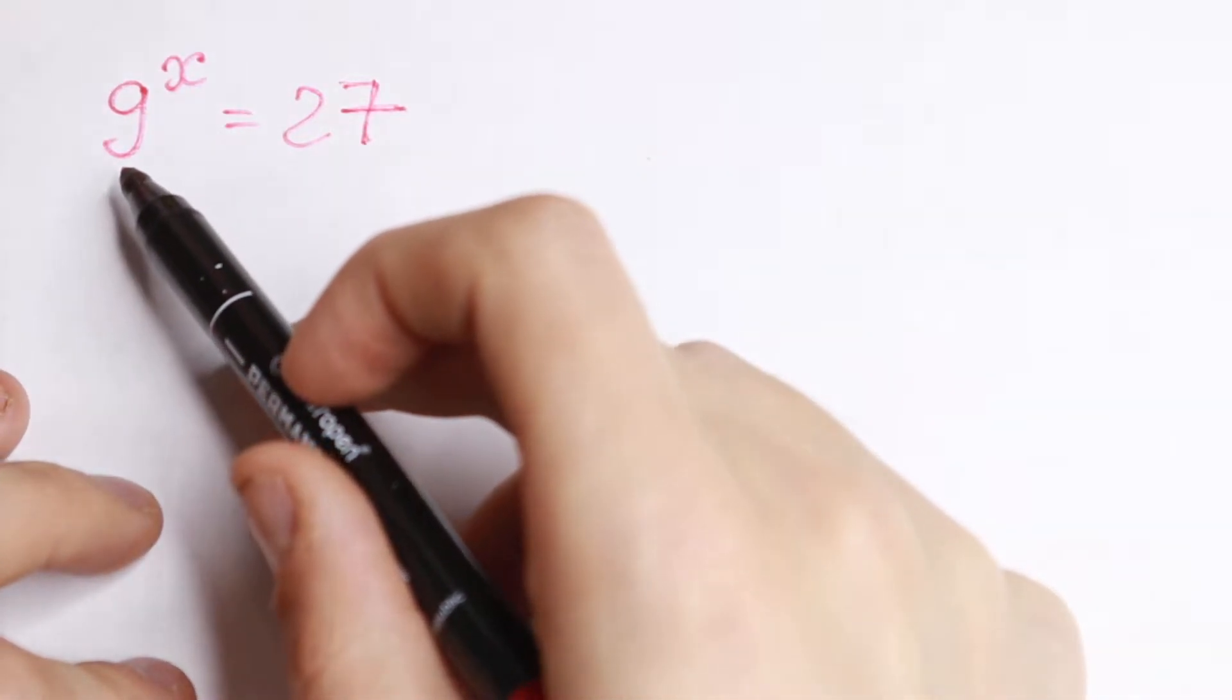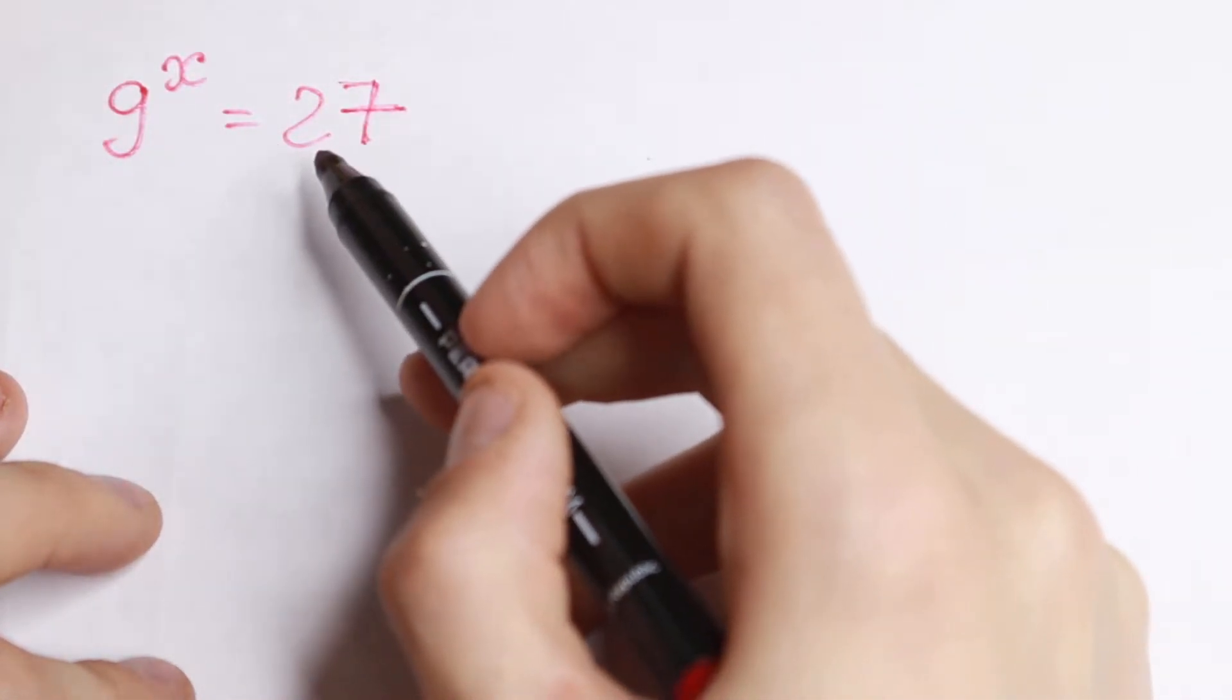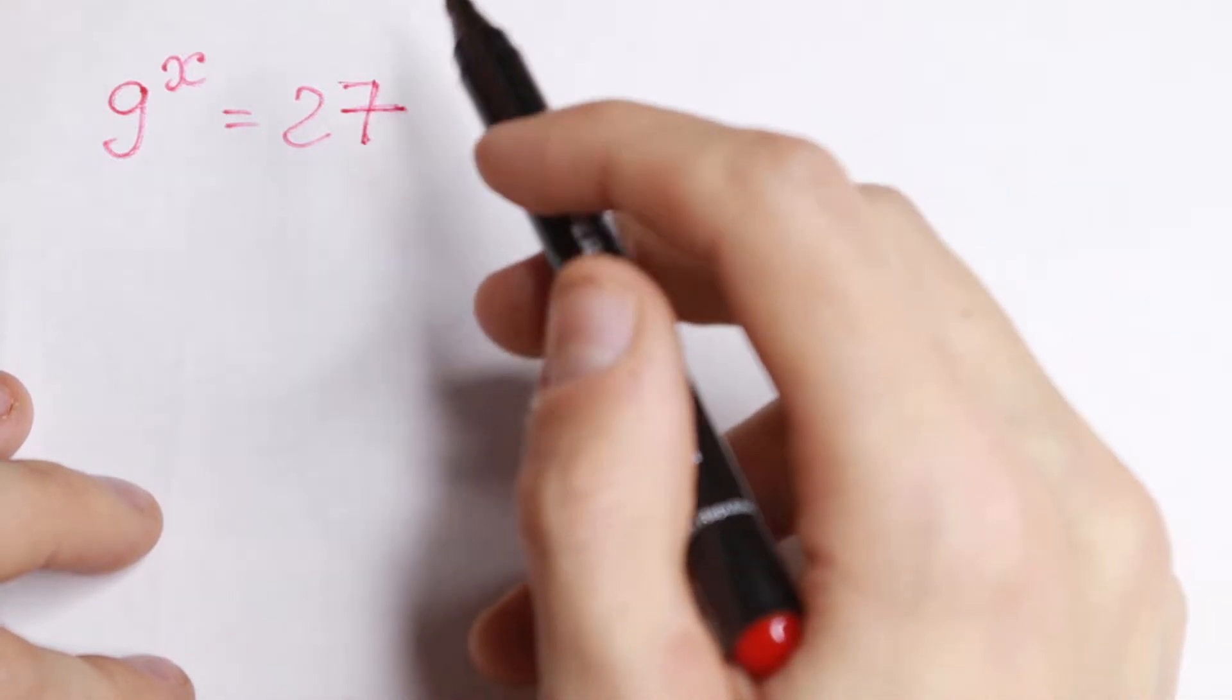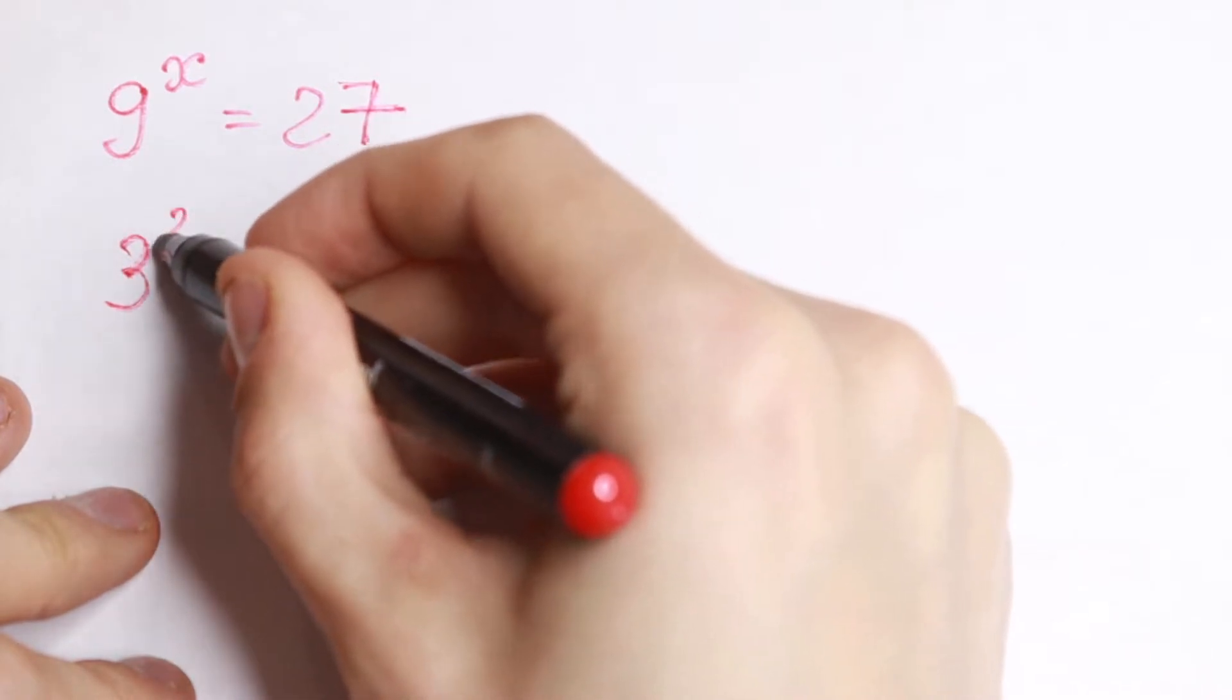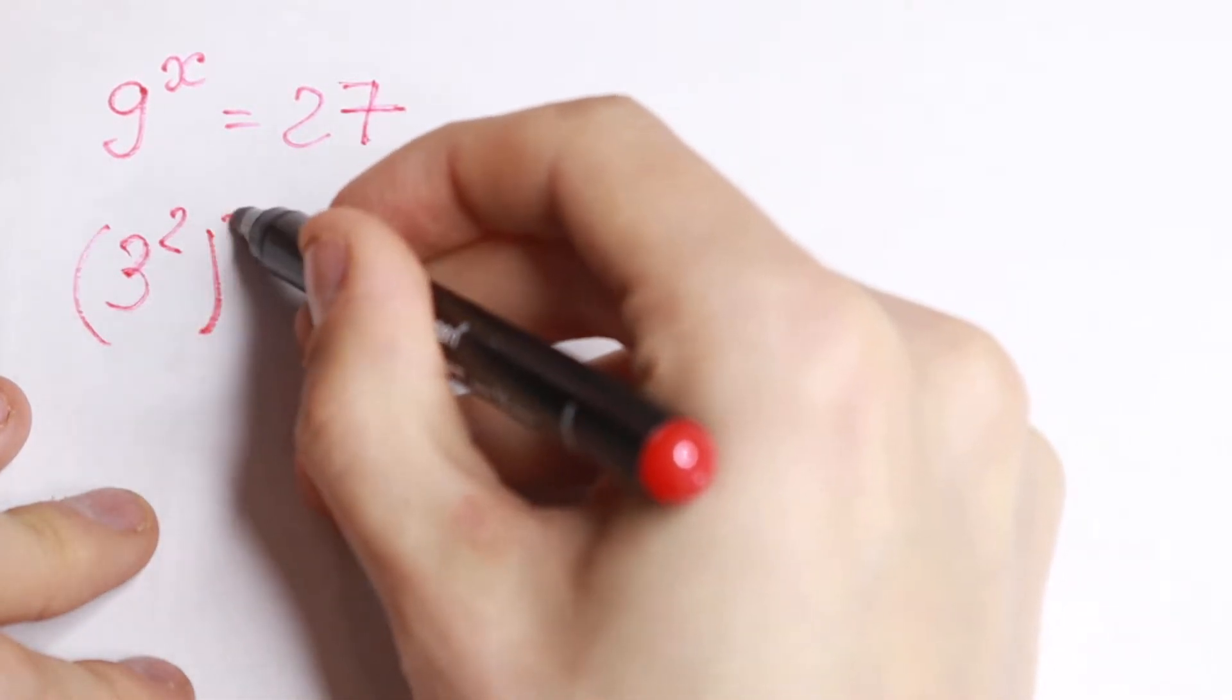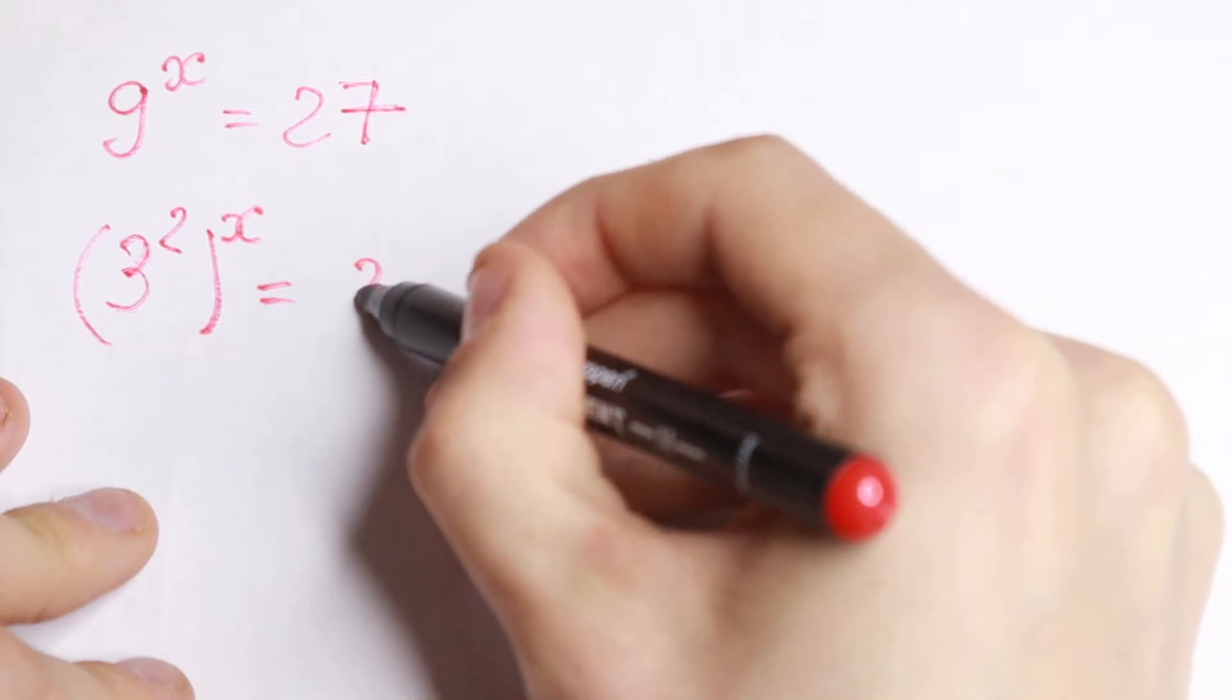First of all, we can see that this 9 can be written as 3 square and this 27 can be written as 3 cube. So let's do this. Let's write this 9 as 3 square to the power x equal to 3 cube.